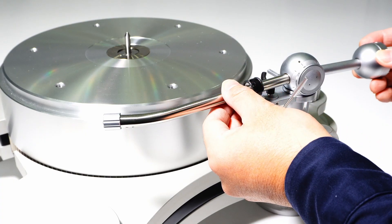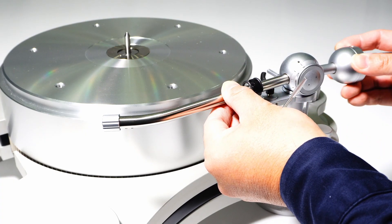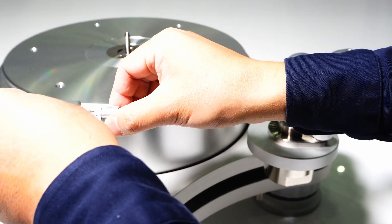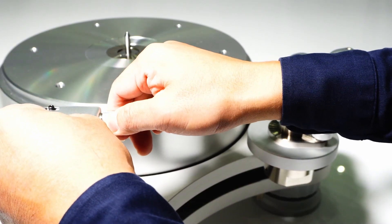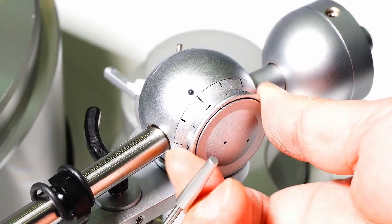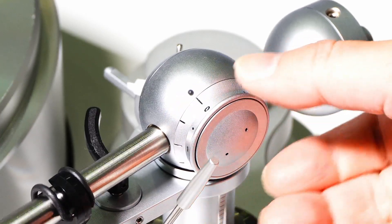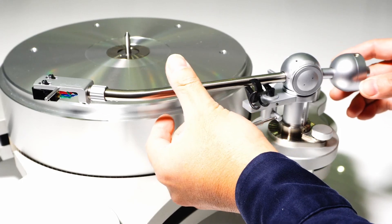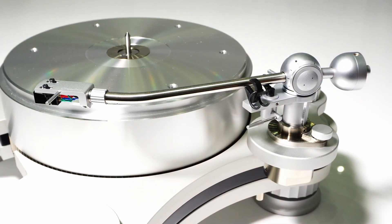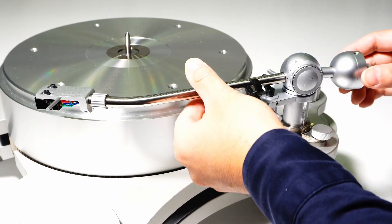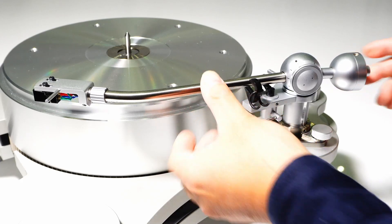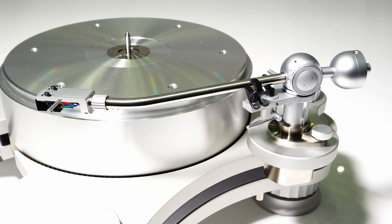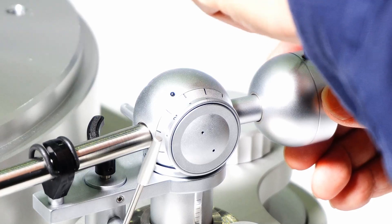Install the counterweight and head shell. Before balancing the level of the tonearm, make sure that the tracking force dial is set to zero position. Remove the stylus protection cover and balance the level of tonearm by moving the counterweight back and forth. When you confirm that the tonearm is level, carefully tighten the counterweight adjustment screw.